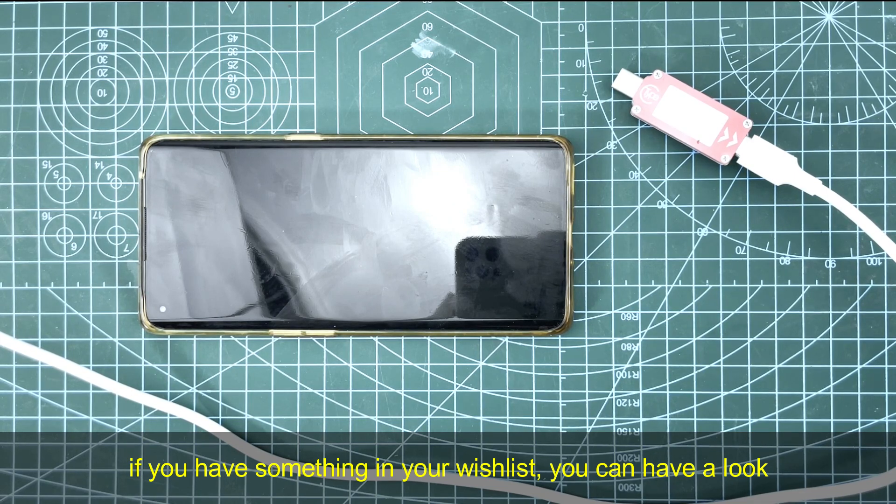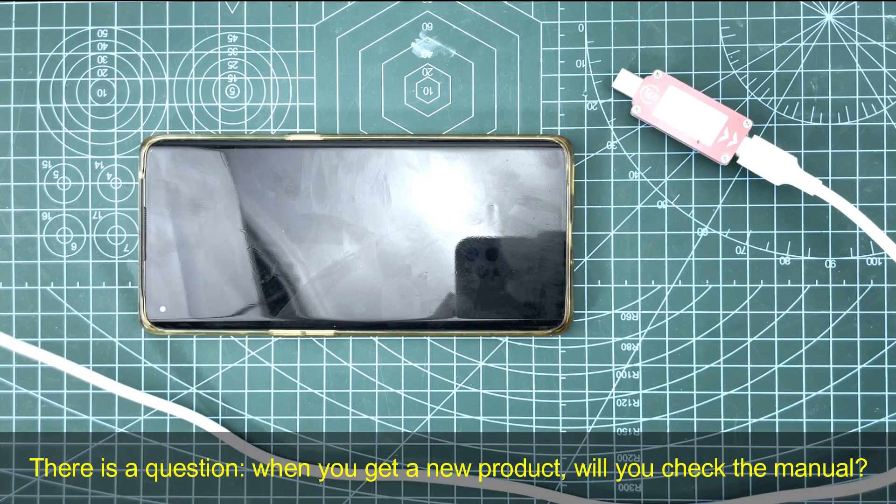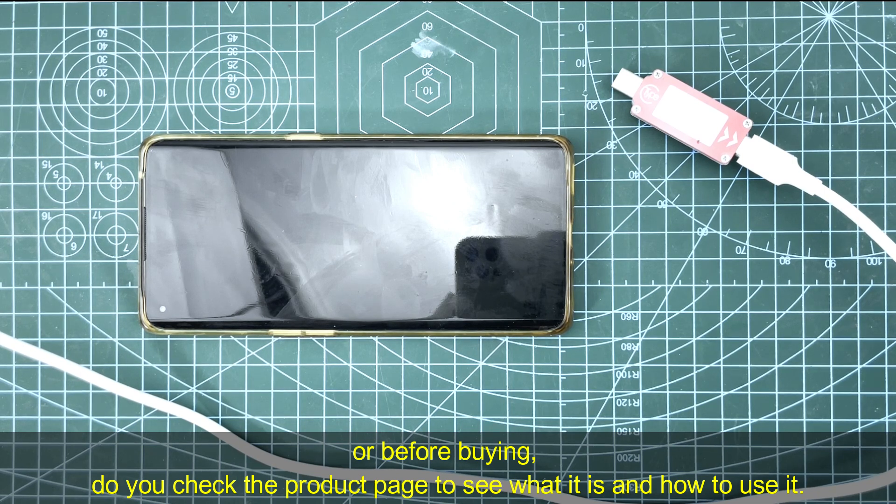If there's something you want in our shop or other shops, you can have a look. So first problem is: when you get a new product, do you check the manual, or before buying, do you check the product page to see what it is and how to use it?